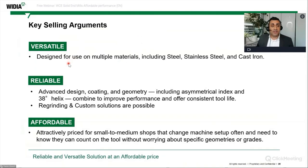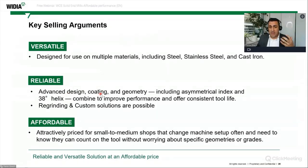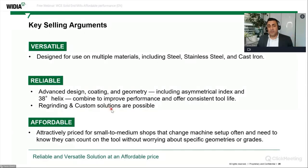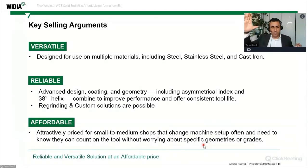Bringing all key selling arguments together: versatility — the four and five flute tools are designed for multiple materials: steel, stainless steel, cast iron, and S materials as secondary choice. Reliability — advanced design, advanced coating, advanced geometry, including asymmetrical indexing and a 38-degree helix on the five-flute. Consistent tool life at a great price. Regrinding and custom solutions are possible. Most importantly: an attractive price for small to medium job shops, closing the gap between high performance and general purpose tools in the PV performance value area.